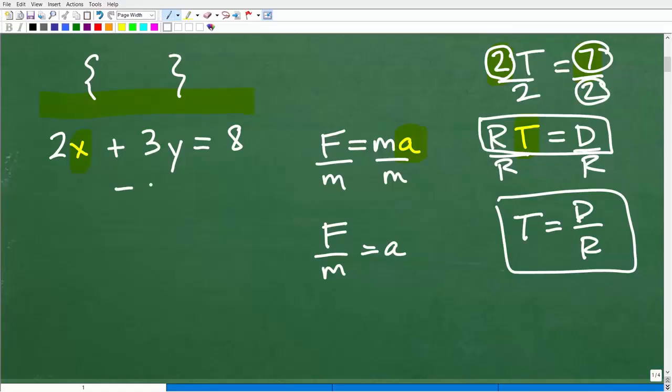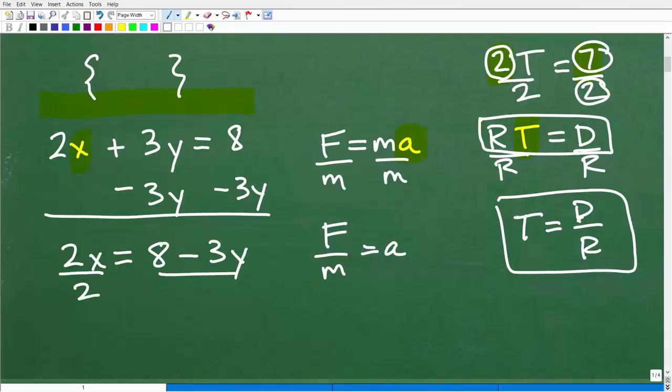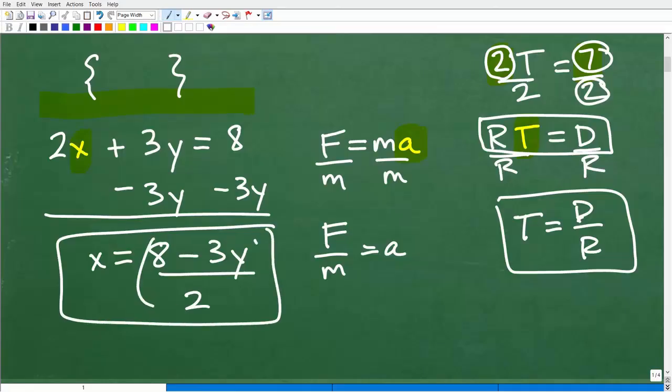So we're thinking of everything else in terms as a number. So 3 times y, this is just like one number in and of itself. So to solve for x, I'm going to go ahead and subtract 3y from both sides of the equation. And I get 2x is equal to 8 minus 3y. So to solve for x, I'm going to divide both sides of the equation by 2. And you get x is equal to 8 minus 3y over 2. And we can put this in parentheses. And this would be an expression that you would use, for example, when you're doing the substitution method when you're solving for systems of equations.